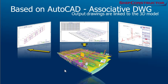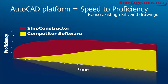An important part of ShipConstructor is its AutoCAD platform. This enables a unique capability called associative drawings. That means from this common 3D model, detailed drawings — whether they be simple assembly drawings, complex assembly drawings, or pipe spool drawings — are all directly linked to the 3D model. If the model changes, the drawings can be updated automatically. The AutoCAD platform also allows your team to reuse their existing skills as well as reuse their existing drawings.